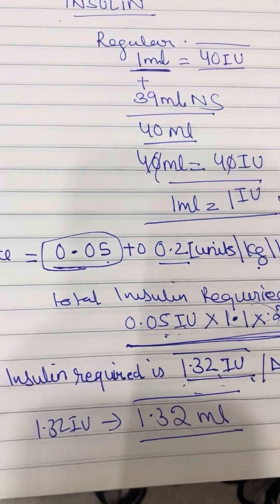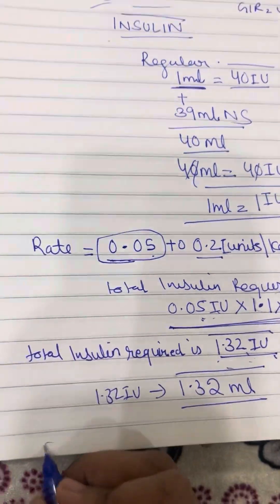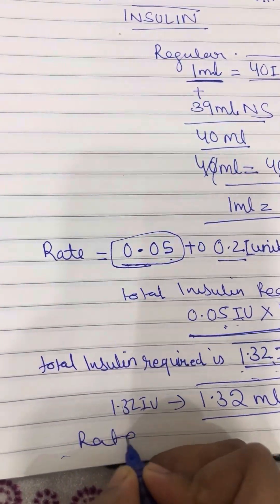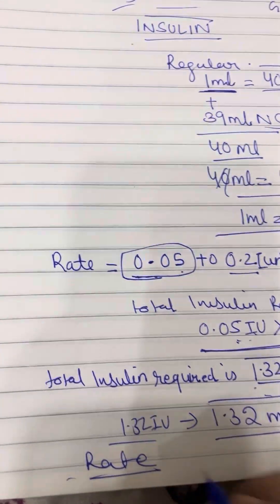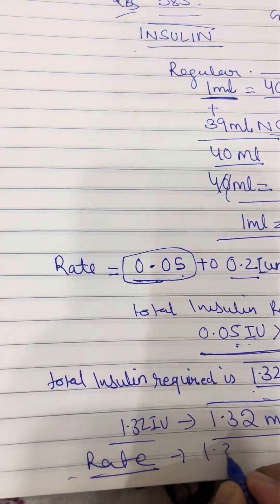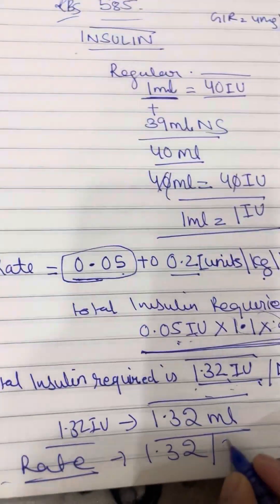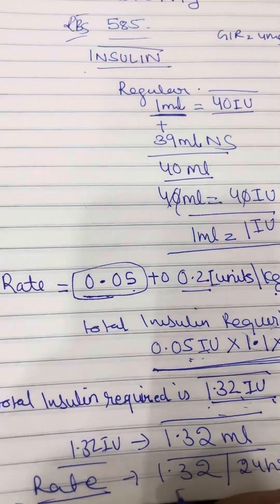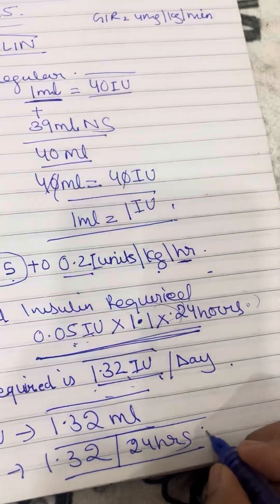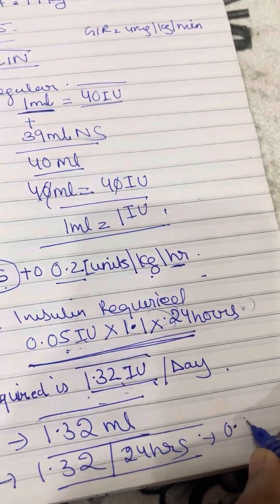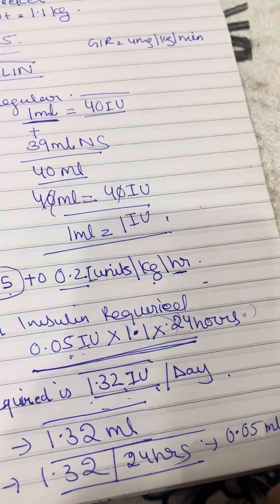Now you can easily write the rate. The rate will be whatever ml that is there, that is 1.32, divided by the 24 hours. You will get the rate, that will be 0.05 ml per hour.